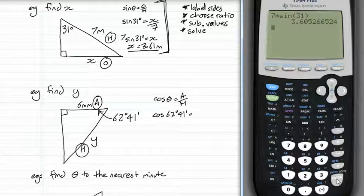We have two things that are tricky here. One, the unknown is on the bottom. Which means it's not going to be quite as simple to solve the equation. And two, we've got the angle in degrees and minutes. Which means we need to enter it that way.